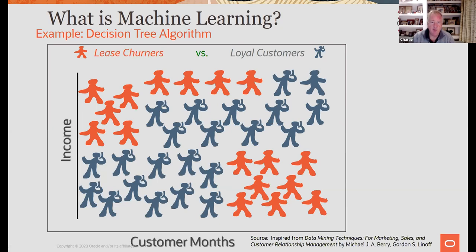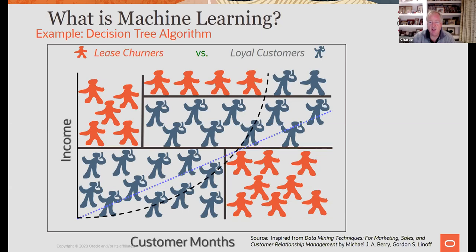If you try to fit a straight line — linear single-variable regression — on two variables, it's not going to do great. A polynomial fit with squared terms might do better. But if you use machine learning techniques like a decision tree, it carves through the data to find cut points. It iterates through every possible cut point until it finds where the information gain about separating the two classes is maximized.